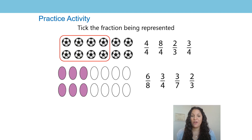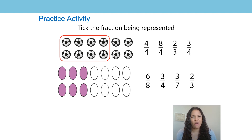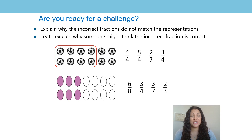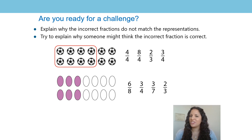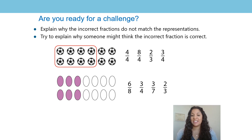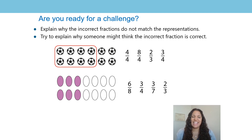Your practice activity for after this lesson is: tick the fraction being represented. Look at the image of footballs and the ovals, and work out which fraction on the right matches those representations. If you want a challenge, explain why the incorrect fractions do not match the representations, and try to explain why someone might think the incorrect fraction is correct — what do you think they might have gotten mixed up with? I hope you enjoy and I will see you soon.